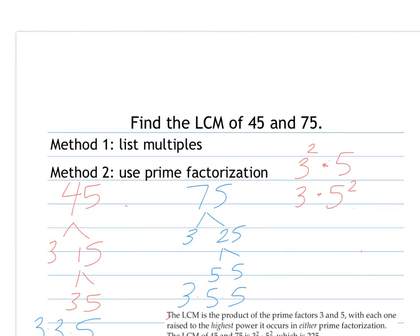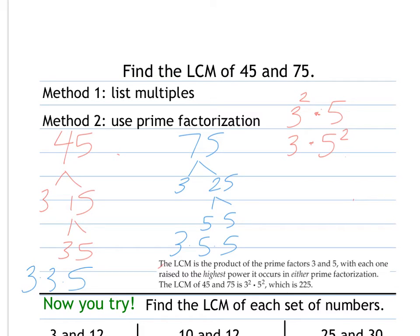The least common multiple is the product of prime factors 3 and 5, with each one raised to the highest power it occurs in either prime factorization. That's the tricky part. So since they both have 3 and they both have 5, I pick the one to the highest power in each. And so I have 3 squared times 5 squared, so that's really 9 times 25, which is 225. So the least common multiple, the smallest number that 45 and 75 multiply to, is 225.